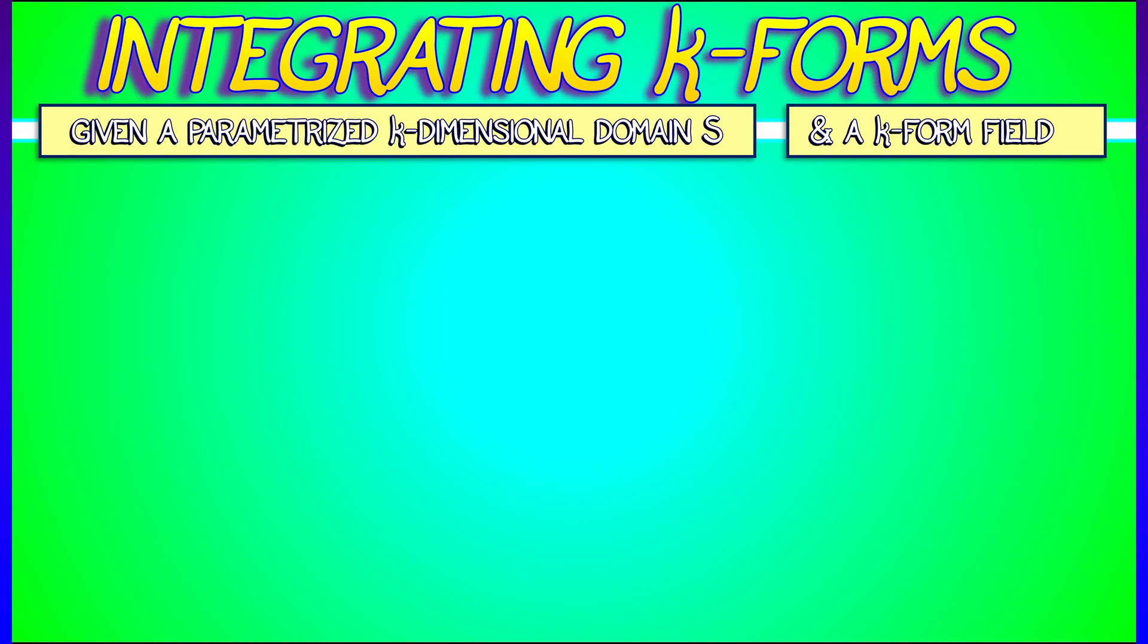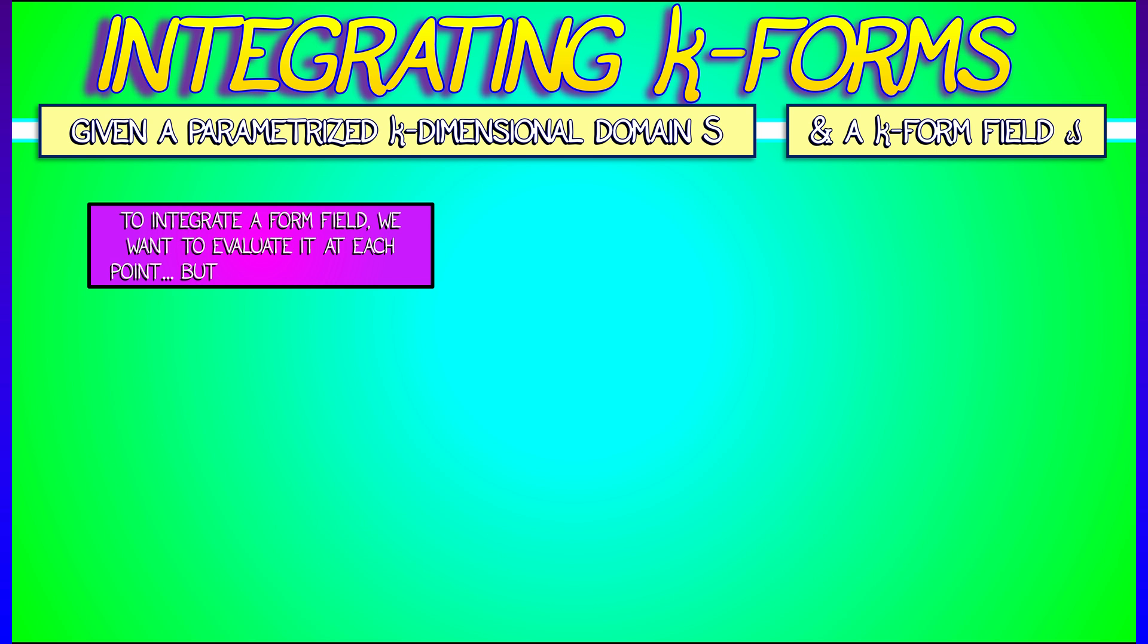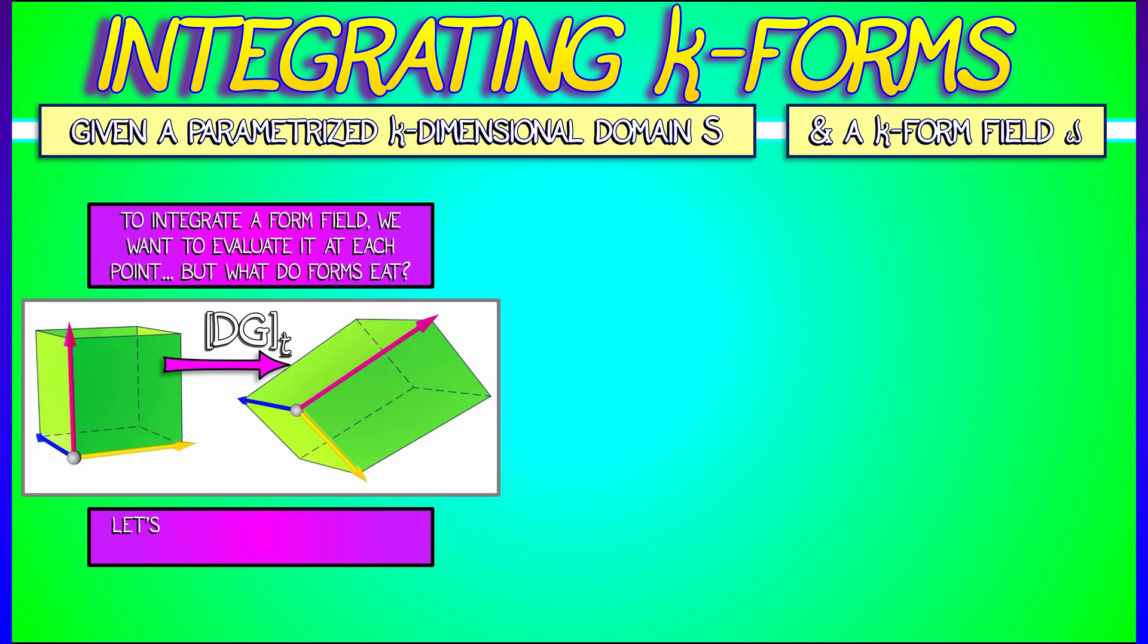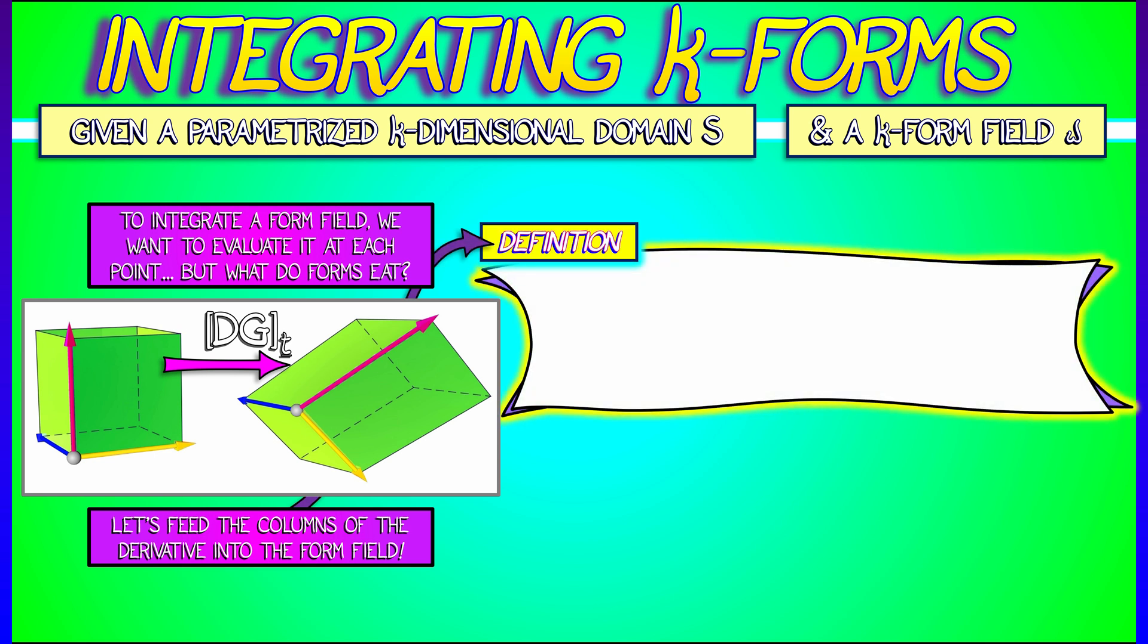So let's say that we're given a k-form field, omega, on S, and we want to integrate it. That k-form field wants to eat k vectors. Let's feed it the k columns of the derivative of the parametrization, DG. And then the integral of omega over S is going to be the same frightening-looking formula that it has always been.